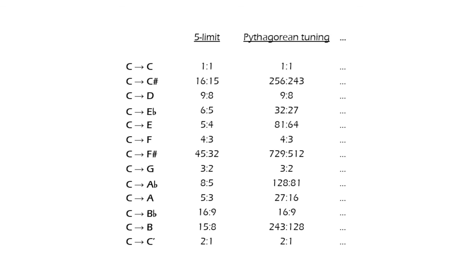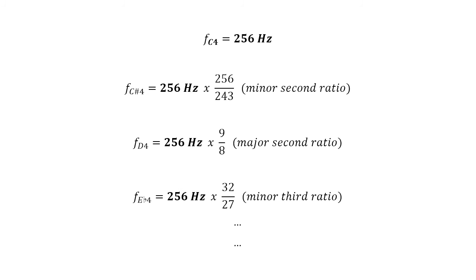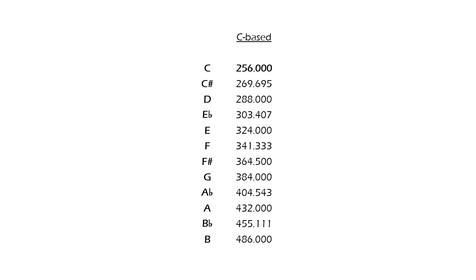To calculate frequencies in just intonation using any of these tunings, first you decide the starting note and its frequency, which will be the unison, and from there, you multiply its frequency by each of the corresponding ratios. This would be the frequencies of the fourth octave in Verdi tuning, which is based in C.